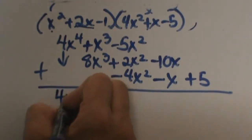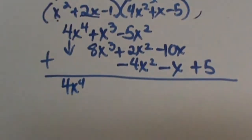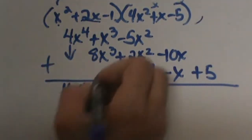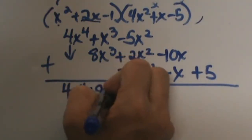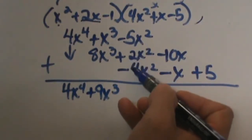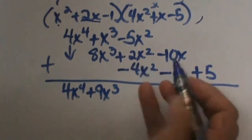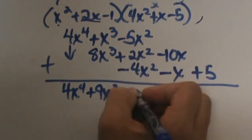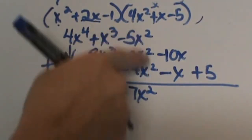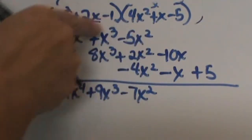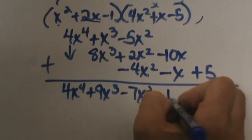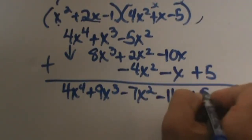4x to the fourth. Then 1x cubed plus 8x cubed is 9x cubed. Negative 5, positive 2, and negative 4 gives me negative 7x squared. Remember when you add, we don't change exponents — we're just adding like terms. And then negative 10x minus x is negative 11x, plus 5.